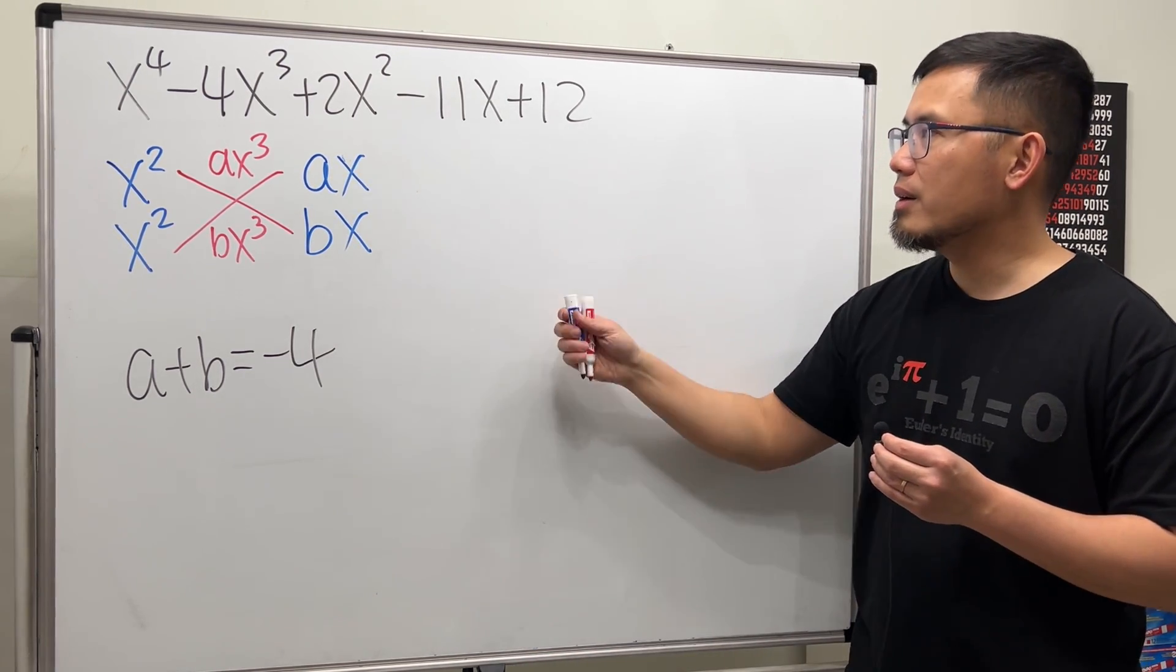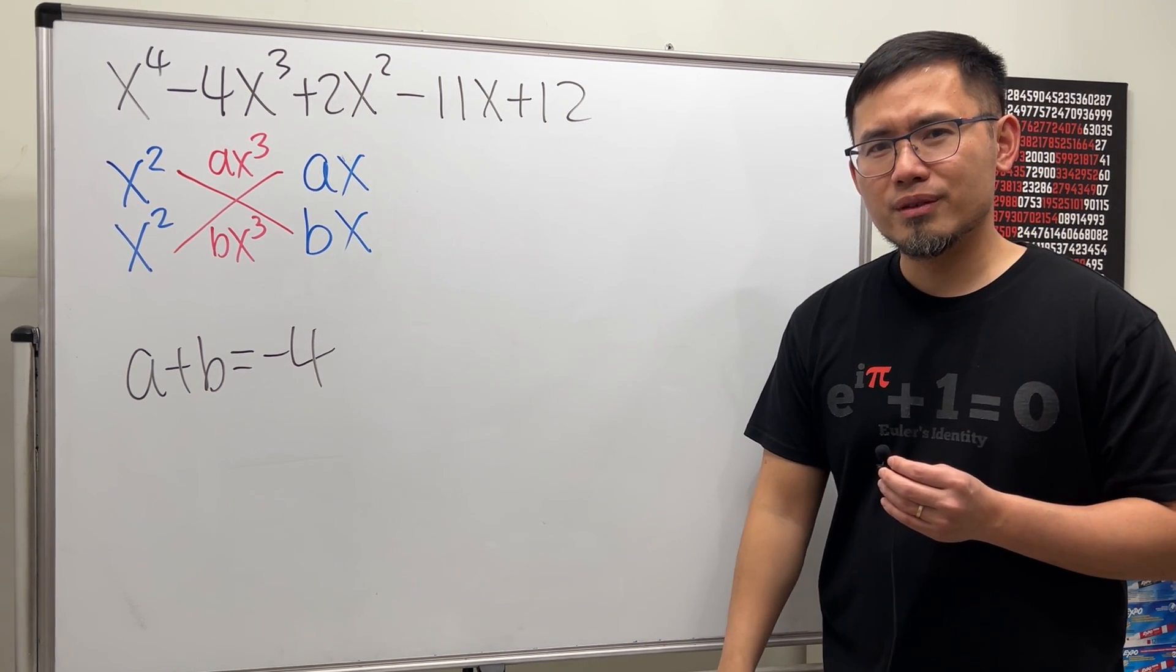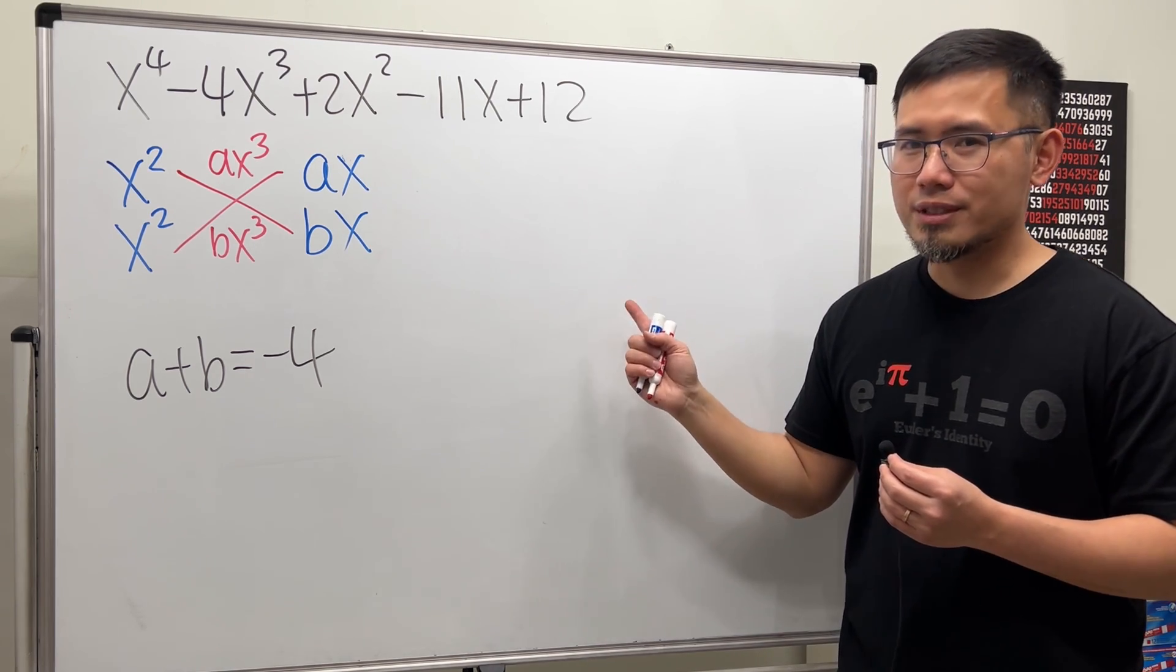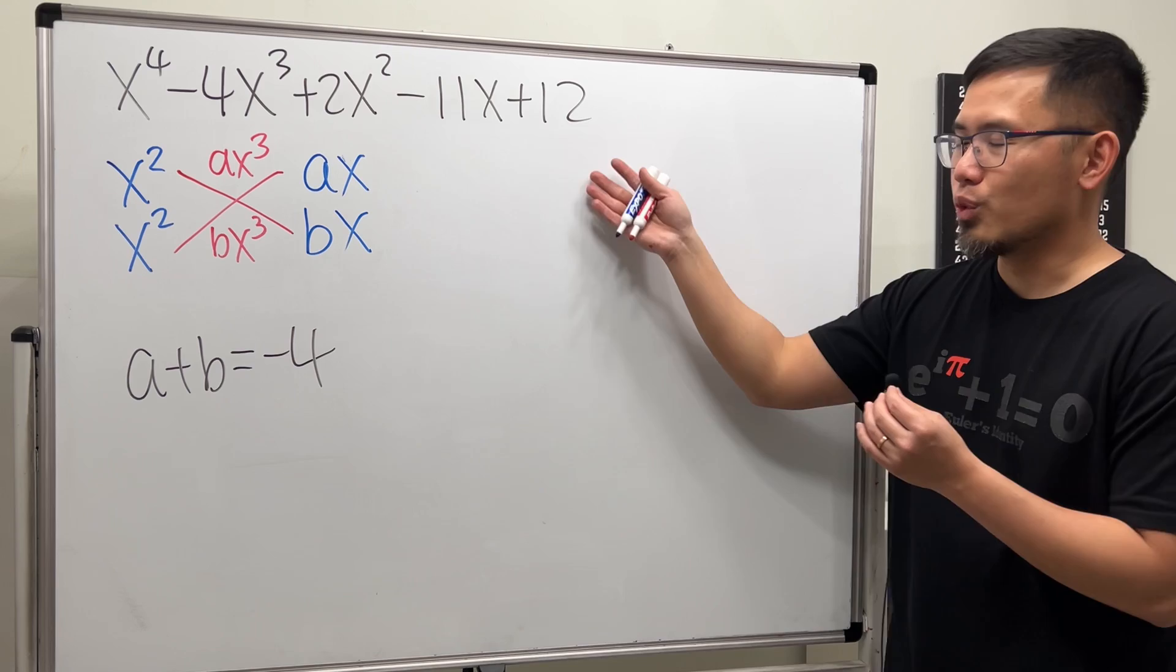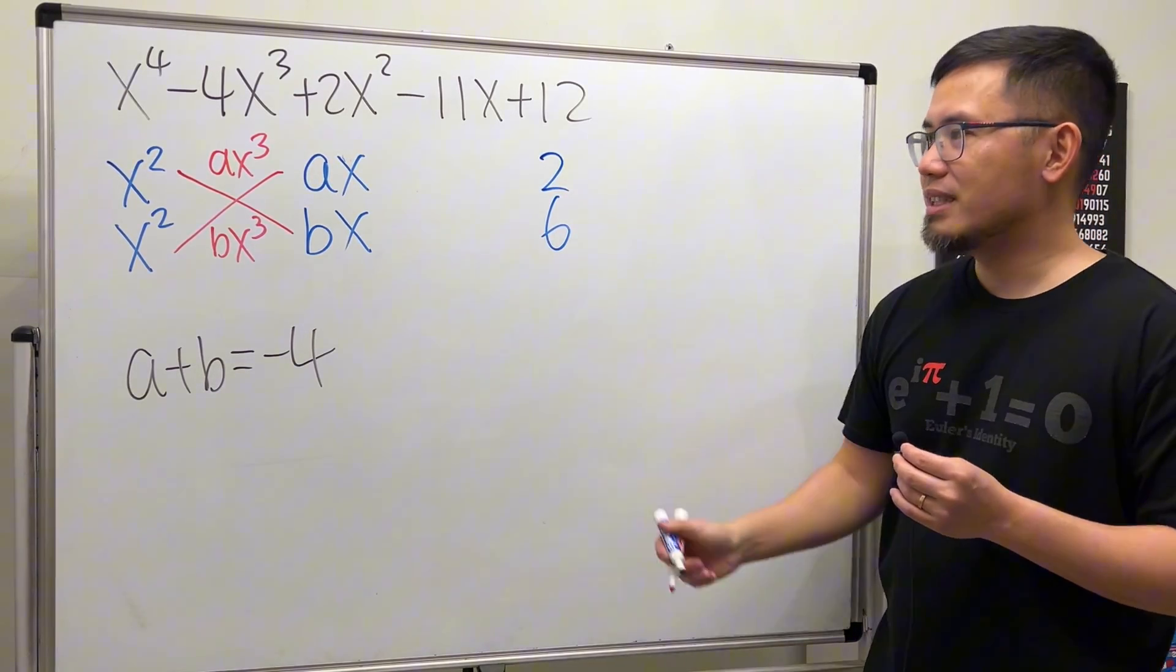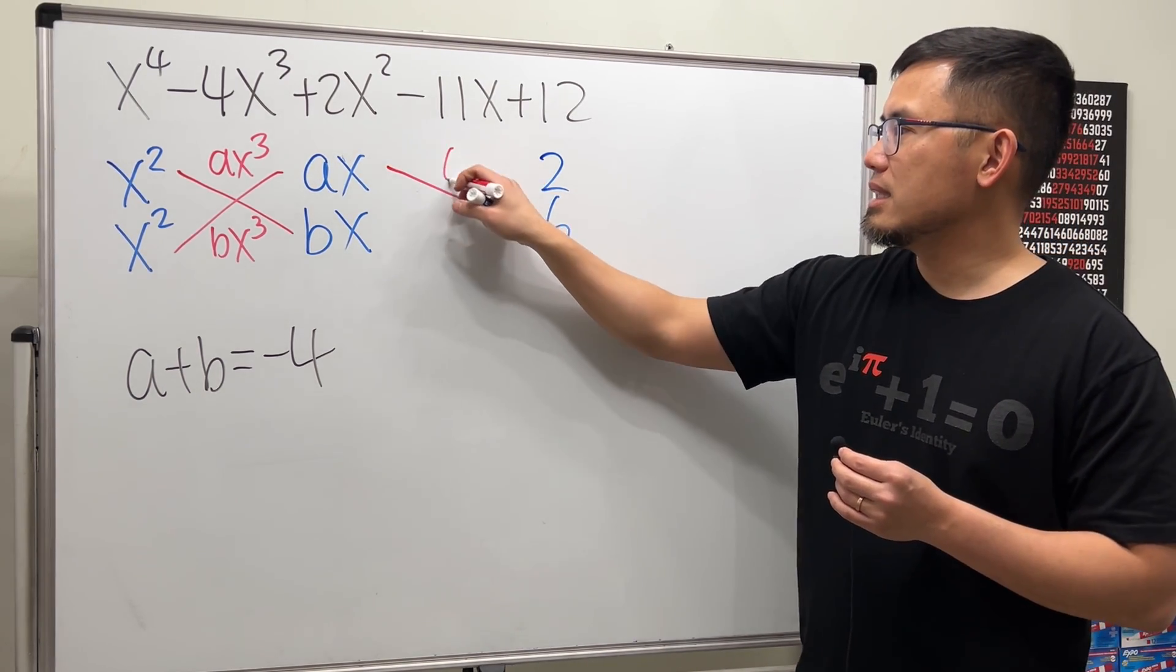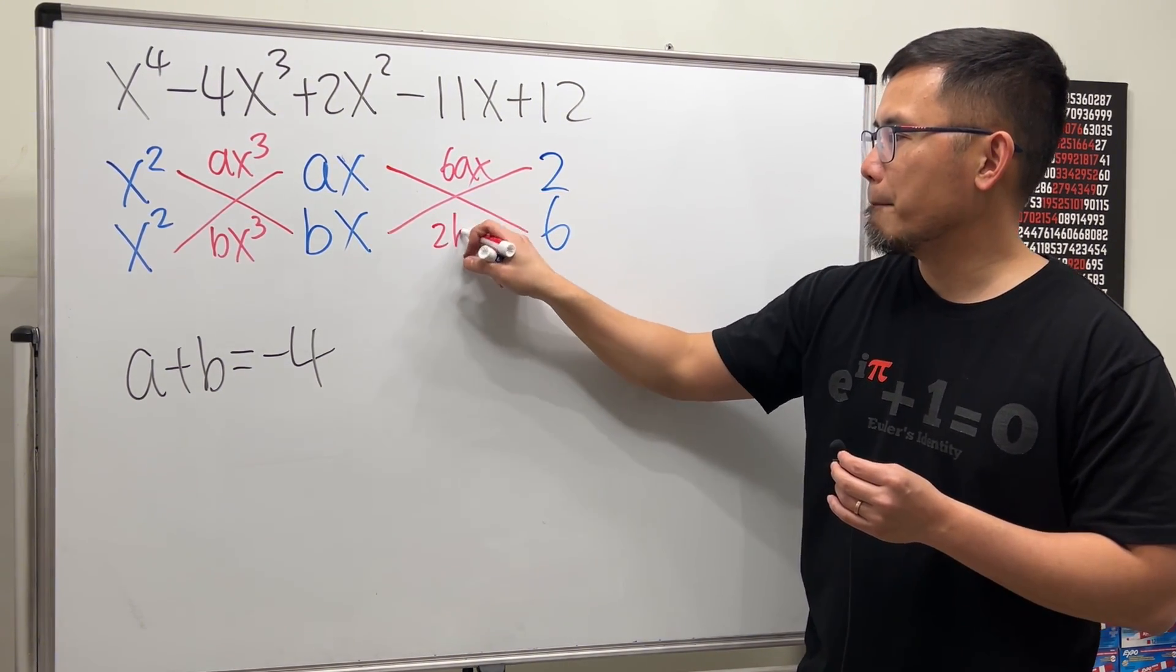Now, we will come here, look at 12. What times what is equal to 12? We have a lot more choices, right? I'm going to do this one wrong first, because I need to tell you what's the indication that we get a wrong combination. Let me try 2 and 6. Once you put this down, we can do the second cross, which is this times this. That's 6ax, and this times that, which is 2bx.